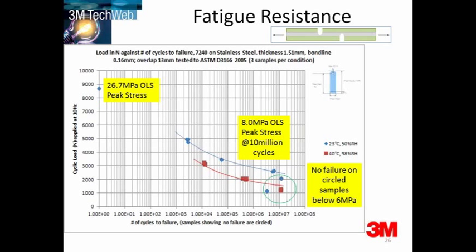Failure can occur under cyclic or repeated loading conditions at much lower forces than in a single dynamic test. Take this plot for example — this is the 3M 7240 adhesive. When first tested, it approaches 27 MPa on a single lap shear test. After 10 million cycles, the strength of the adhesive reduced to 8 MPa.